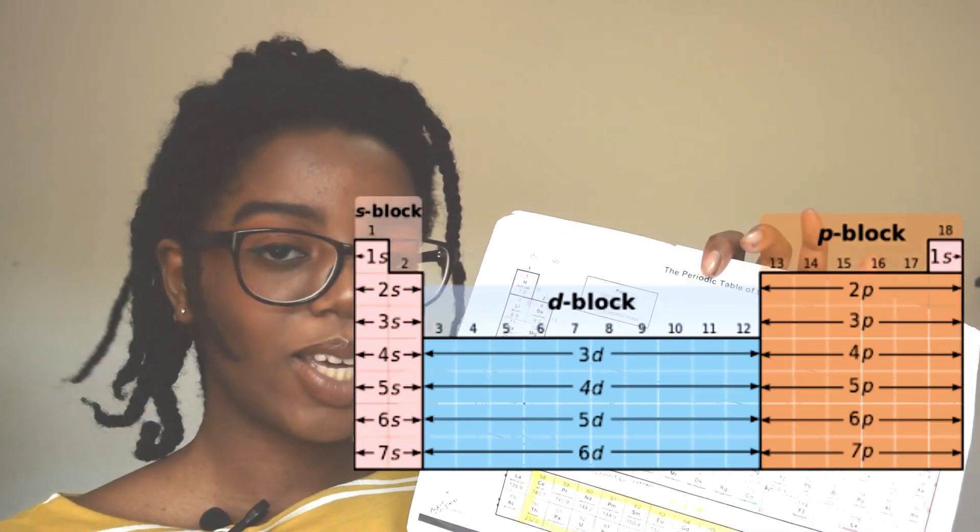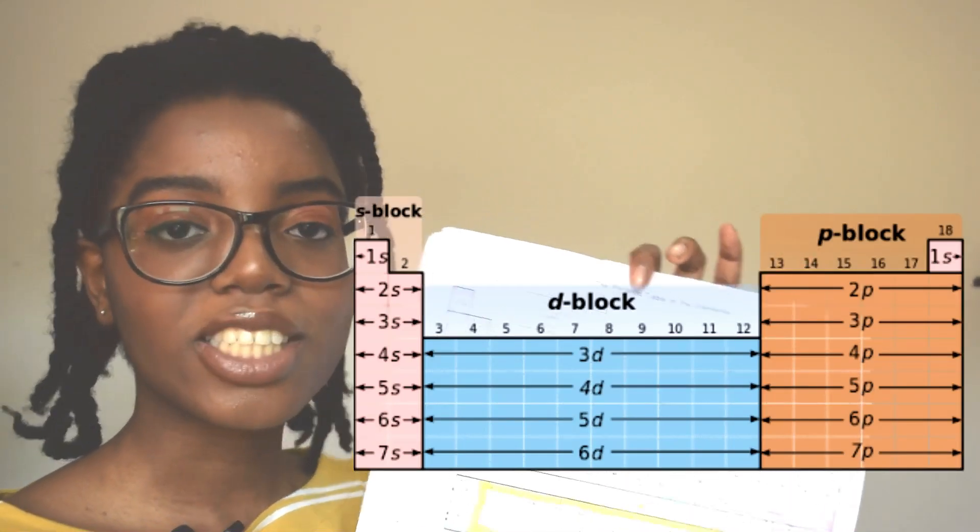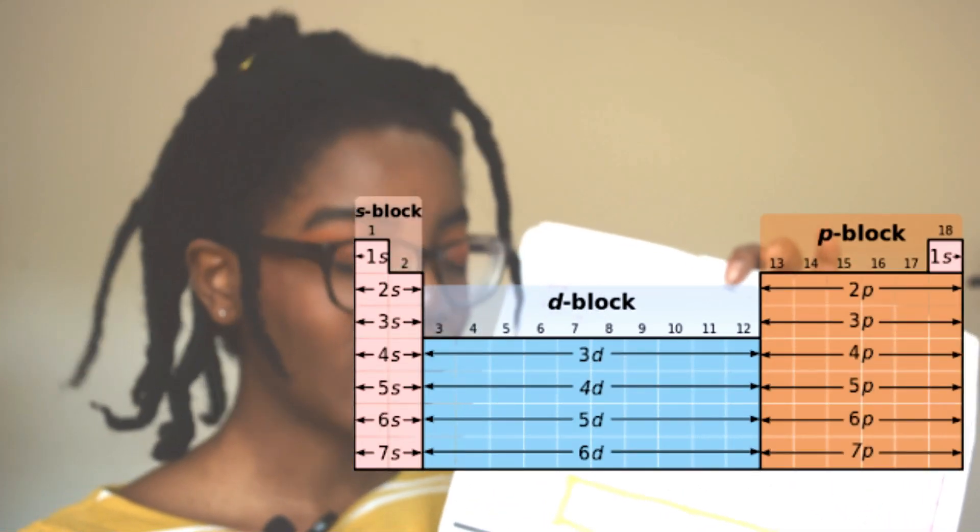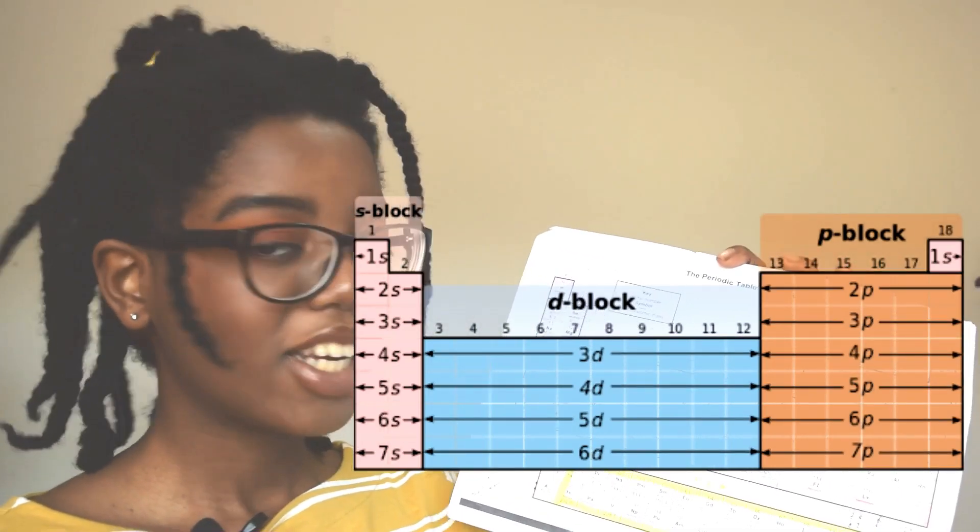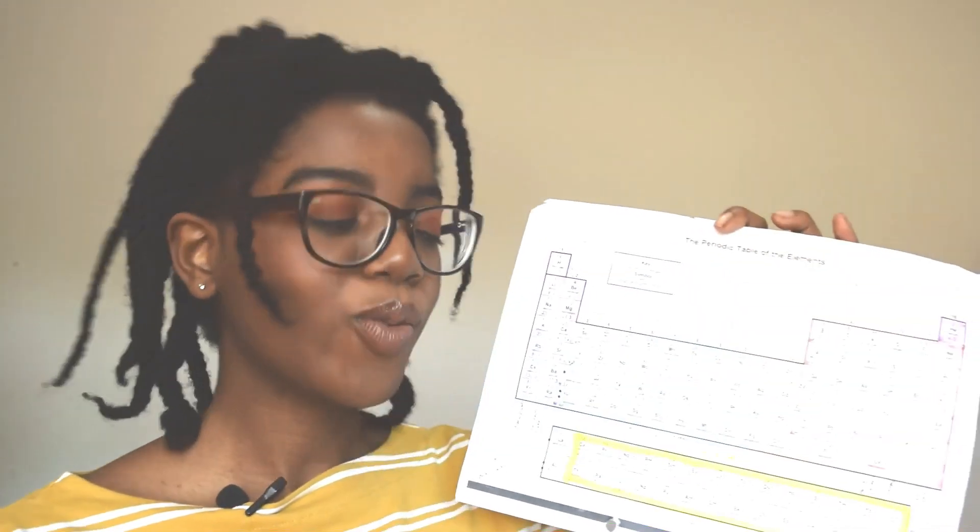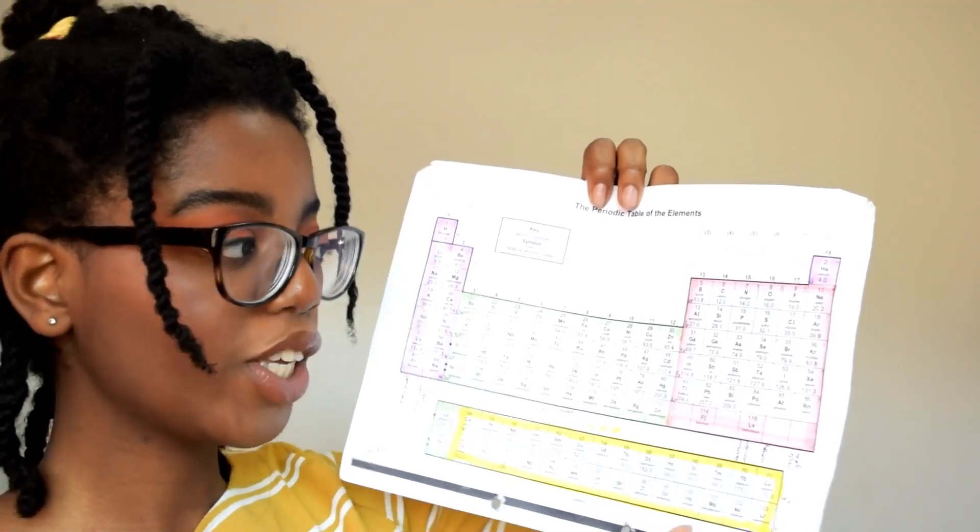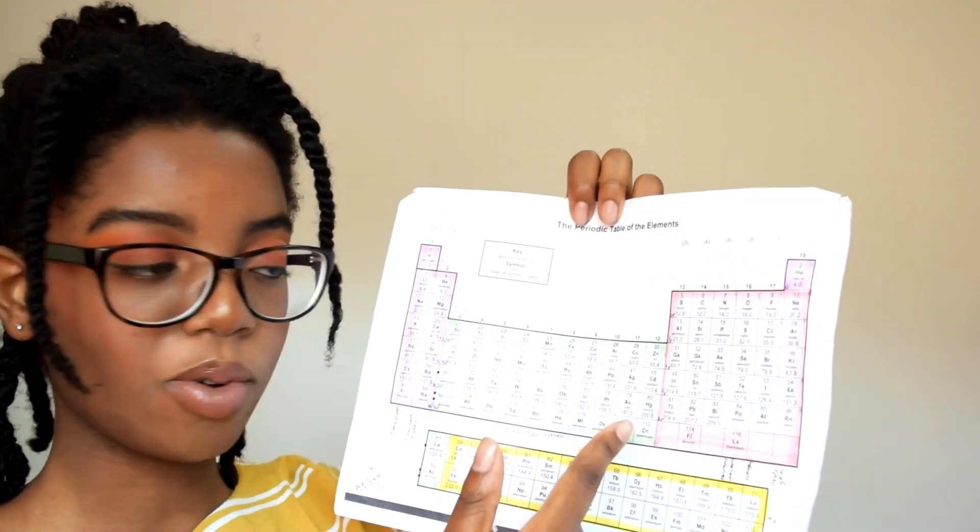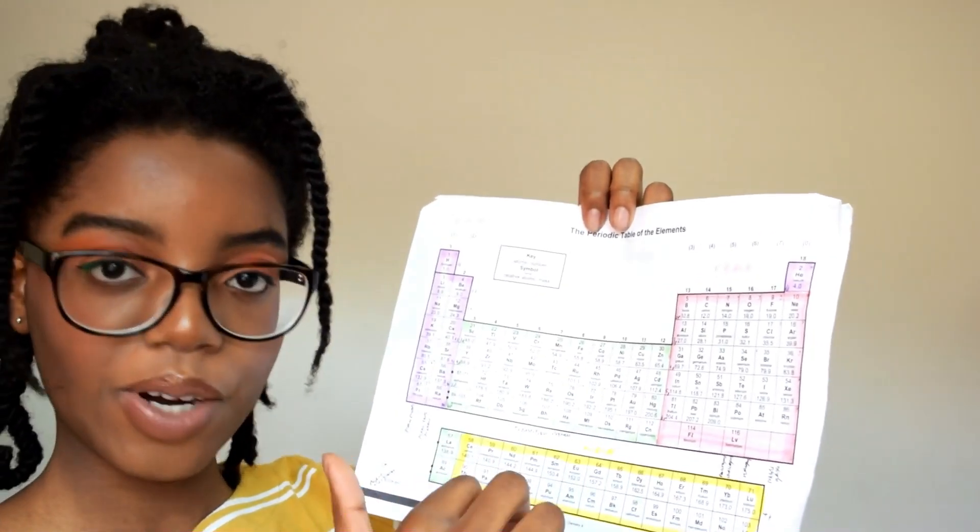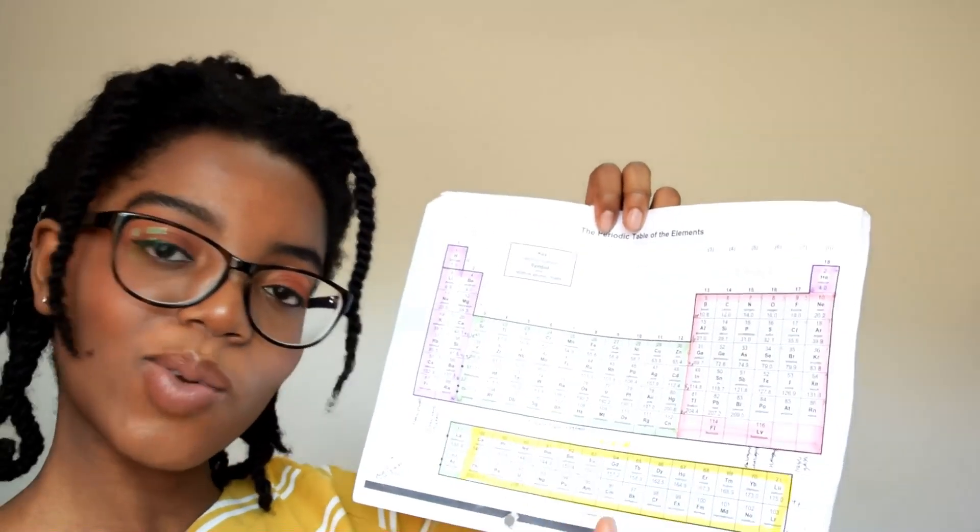And then really interestingly we have the d block which is all the transition metals which you'll be learning about in year 13. And then more unknown we have the f block with all of the newer elements which have been found. So actually on your periodic table you can help yourself and label the periodic table. This is one of the first things we did in chemistry and you probably can't see but I just have a few annotations.